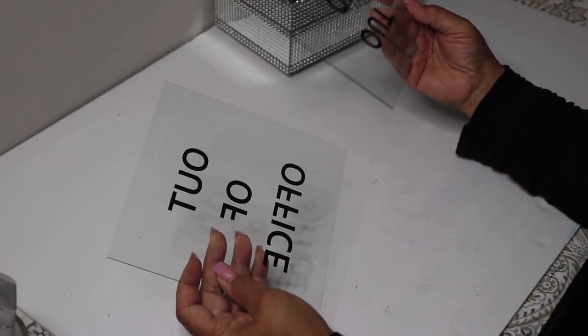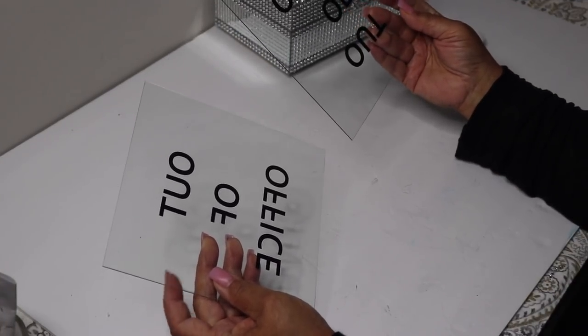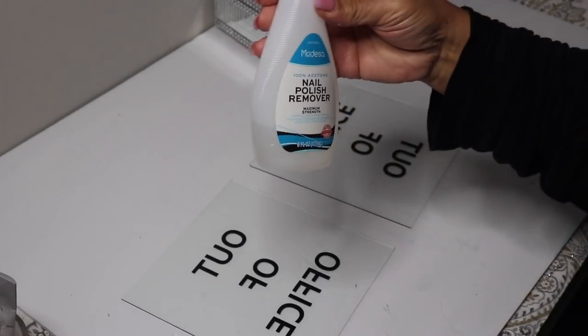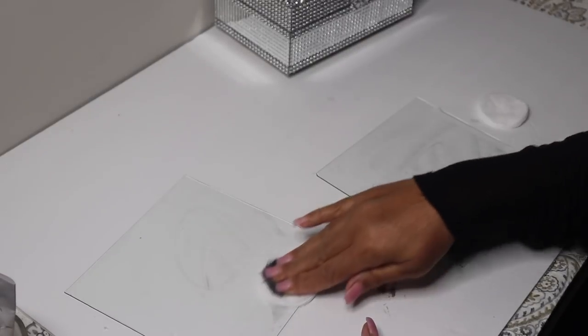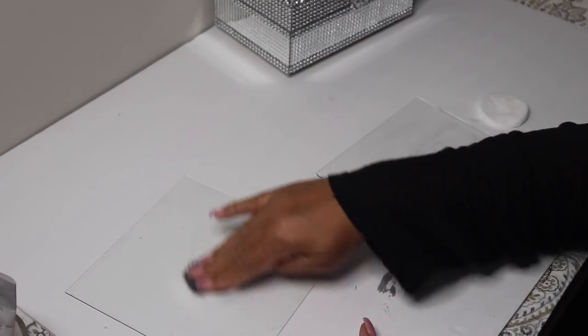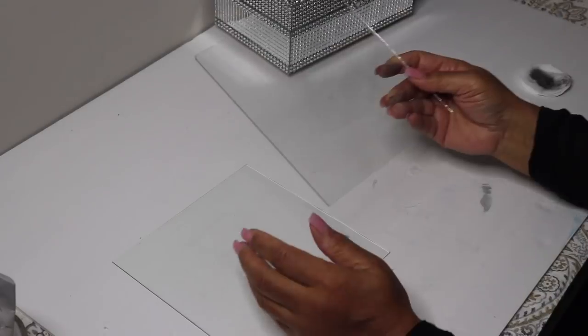Next, I'll remove the lettering from this glass with nail polish remover. I wiped the glasses a second time with the nail polish remover, then cleaned them with glass cleaner.